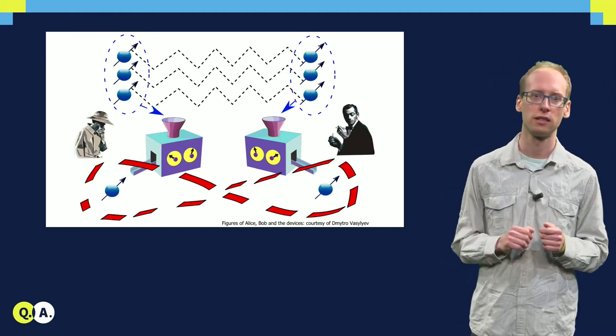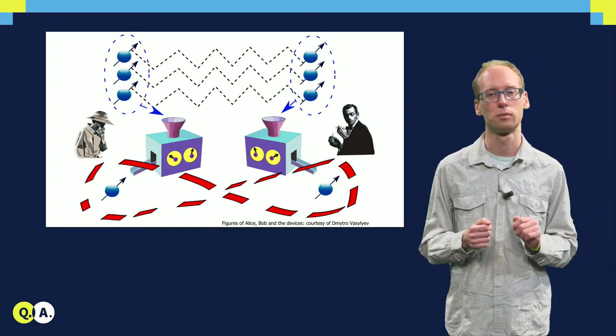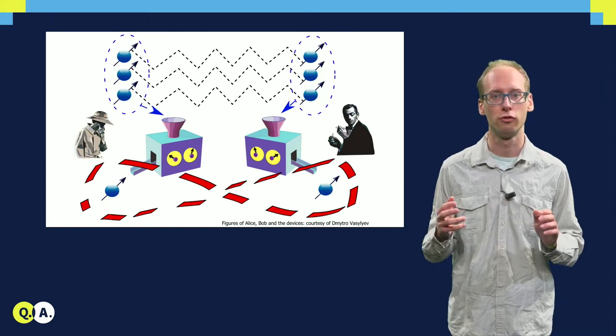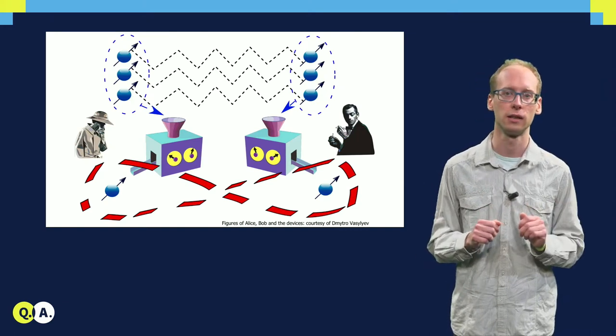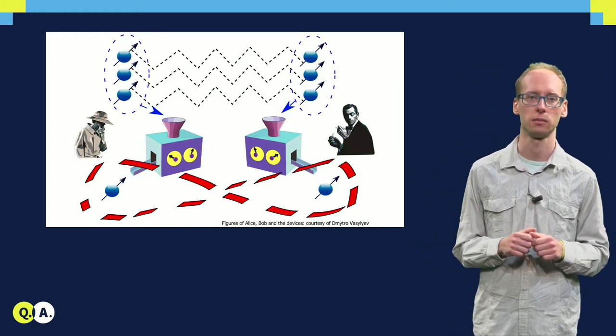Also similarly to alcohol distillation where the total amount of alcohol cannot be increased, the local operations and classical communication used by Alice and Bob allow them for concentrating existing entanglement into a smaller number of copies without increasing the total amount of entanglement.